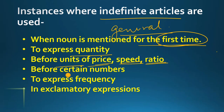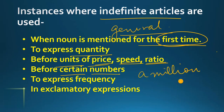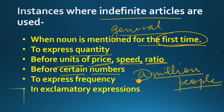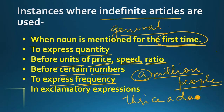Indefinite articles are also used before certain numbers. For example, we say 'a million people' — यहाँ पर number है 'million' और उससे पहले हमने indefinite article 'a' use किया. It is also used to express frequency. For example, a doctor prescribes: 'you have to take this medicine thrice a day' — वो frequency बता रहे हैं कि दिन में 3 बार medicine लेनी है और यहाँ पर भी 'a' use हुआ है.